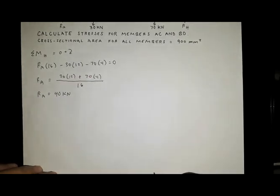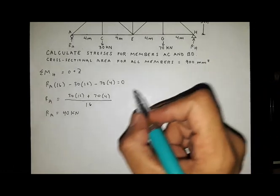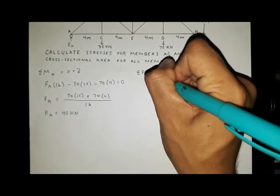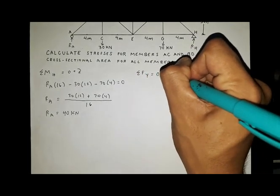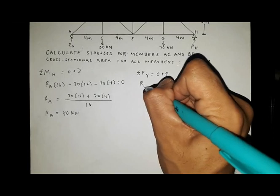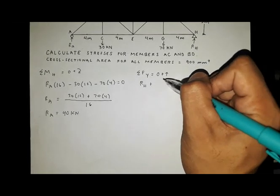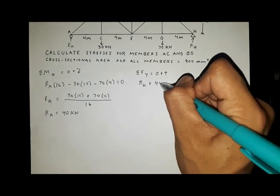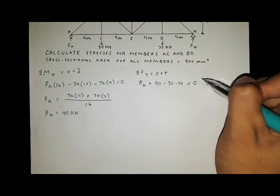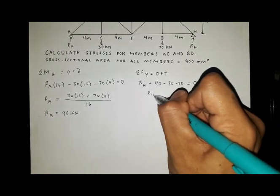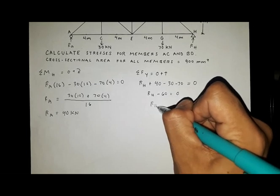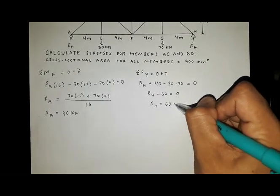Now solve for the vertical reaction at H using summation of forces along Y equal to zero, positive upward. We have the vertical reaction at H plus 40 minus 30 minus 70 equals zero, giving reaction H minus 60 equals zero. Therefore, the vertical reaction at H is equal to 60 kilonewtons.